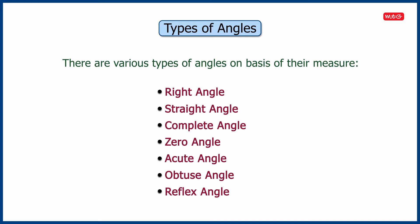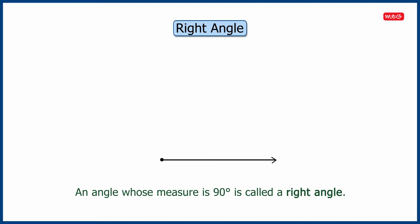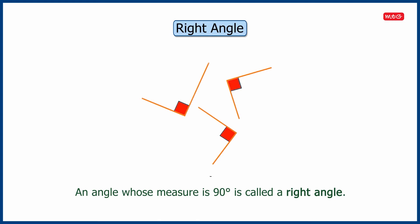Firstly, let us learn about right angle. An angle whose measure is 90 degrees is called a right angle. A right angle is a special angle and is denoted as shown. For example, the hands of the clock showing three o'clock and nine o'clock form a right angle.